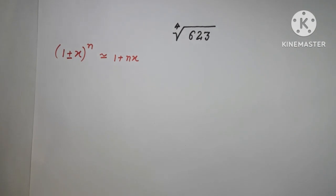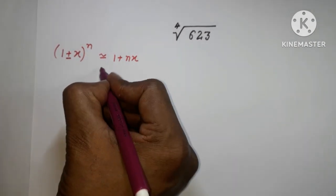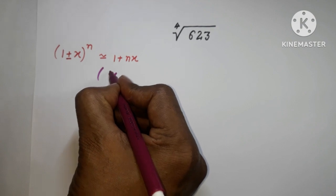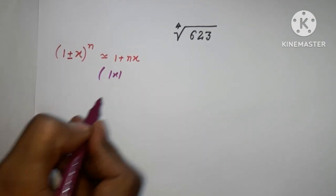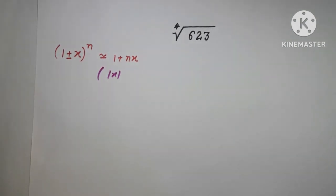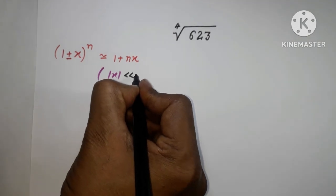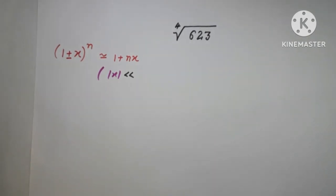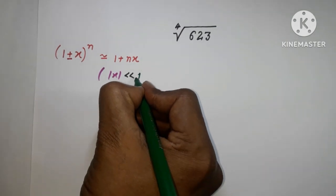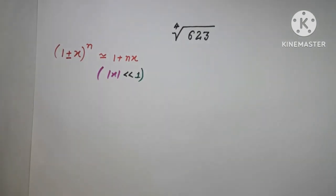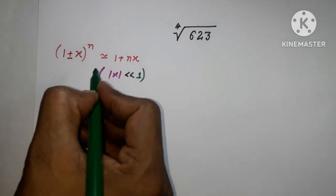I'm going to use this formula. My condition is that |x| should be much much less than 1—it should be much much less than 1. So I will use this formula to solve.